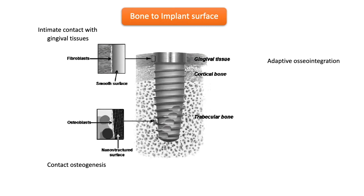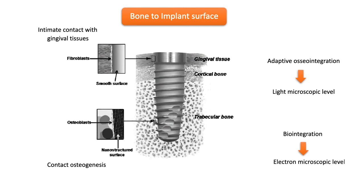Other related terms include adaptive osseointegration, which is osseous tissue approximating the surface of the implant without an apparent soft tissue interface seen at the light microscopic level, and biointegration, which is a direct biomechanical bone surface attachment confirmed at the electron microscopic level.